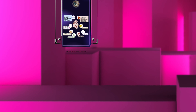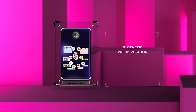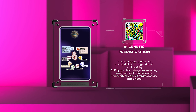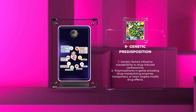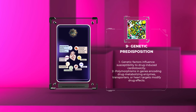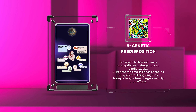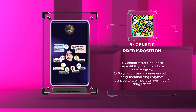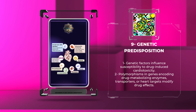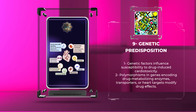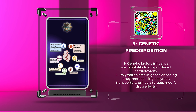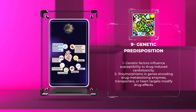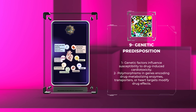Genetic factors can influence an individual's susceptibility to drug-induced cardiotoxicity. Polymorphisms in genes encoding drug metabolizing enzymes, drug transporters, or targets in the heart can modify the pharmacokinetics and pharmacodynamics of drugs, thereby impacting the likelihood of cardiotoxic effects.